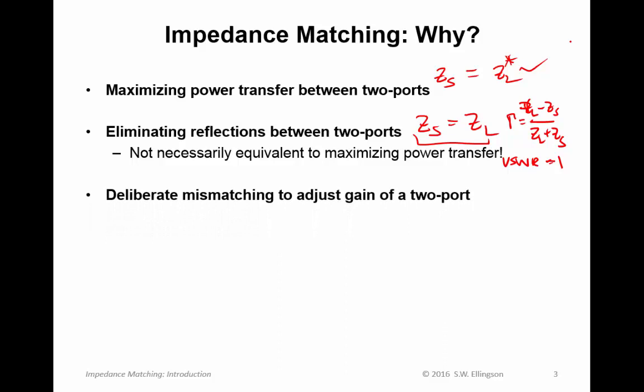A third application of impedance matching is deliberate mismatching to adjust the gain of a two port. We may have seen in the previous lecture that amplifier design is often done by implementing specific impedances at the input and output ports. And by doing that, we can adjust the gain of the two port. Similarly, we can adjust or influence the stability of a two port by implementing specific impedances at the input and output. So these are also impedance matching tasks in the sense that we are somehow trying to achieve a certain kind of impedance. And typically we're trying to interface it to another kind of impedance, maybe 50 ohms. That's typically the case in most RF engineering tasks, but not all.